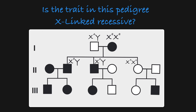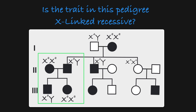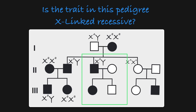Now, if we look at this subfamily, we see that we have affected parents having all affected offspring — that's what we would expect with X-linked recessive inheritance. And when we look at this next subfamily, we see an affected male and an unaffected female. Their daughter is affected, meaning this female must be heterozygous, and her son inherits the dominant allele.